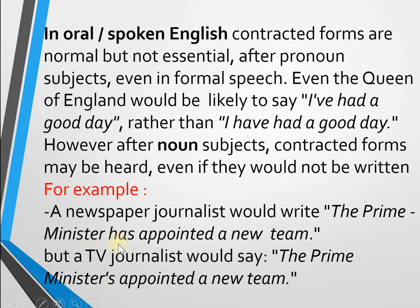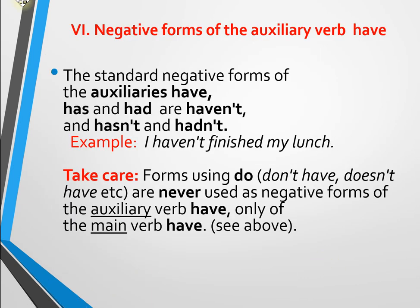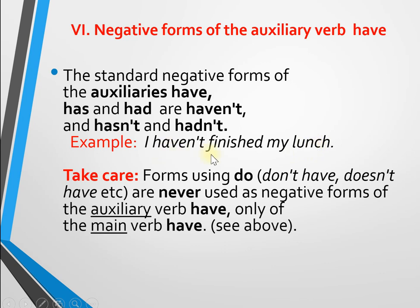Negative form of the auxiliary verb 'have'. The standard negative forms of the auxiliary 'have', 'has', and 'had' are: 'haven't', 'hasn't', and 'hadn't'. Example: 'I haven't finished my lunch.'